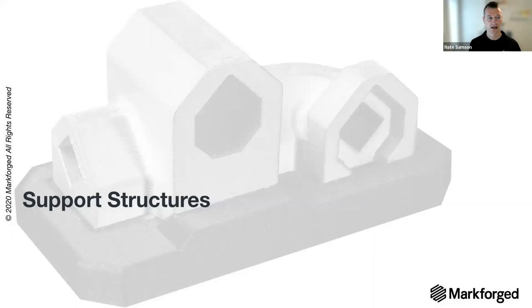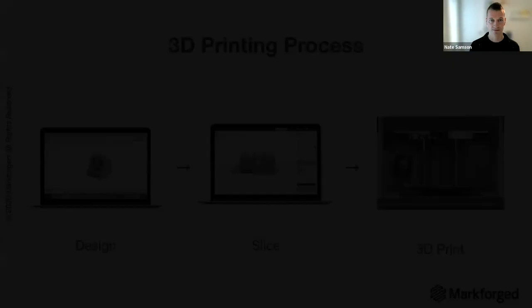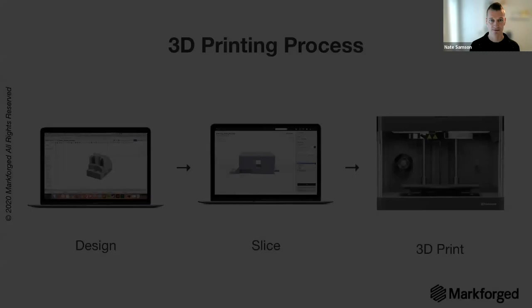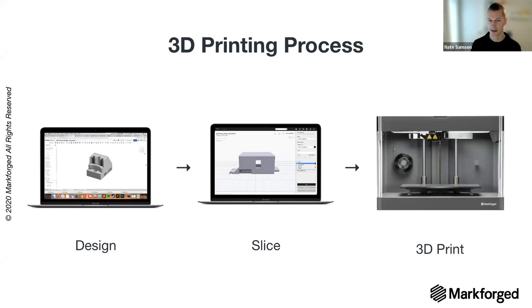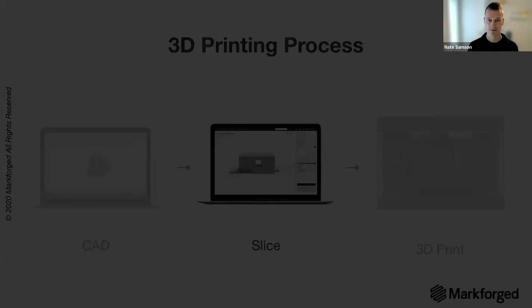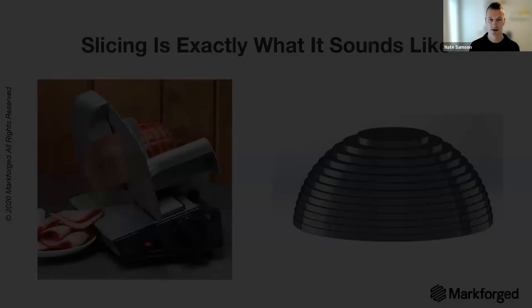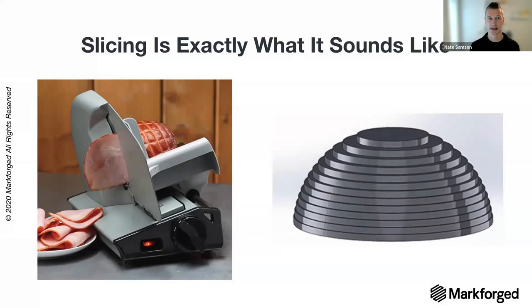Let's dive into supports — this is kind of a 101. One of the first things to think about in design for additive is supports. In the 3D printing process, you start in your preferred CAD platform, export an STL file, bring it into our Eiger platform which has our slicer, and that generates the code sent to the 3D printer for production. We'll focus on the slicing aspect to understand support structures.